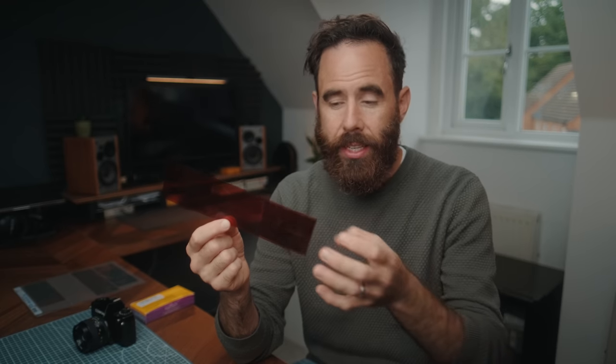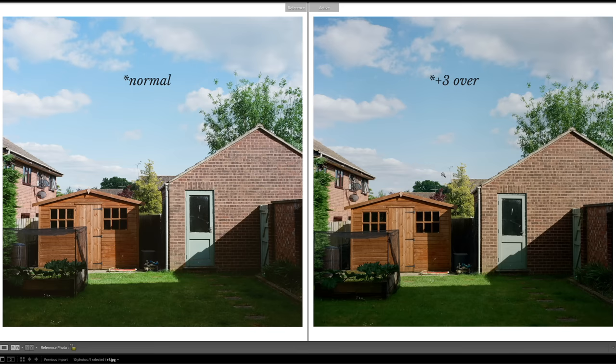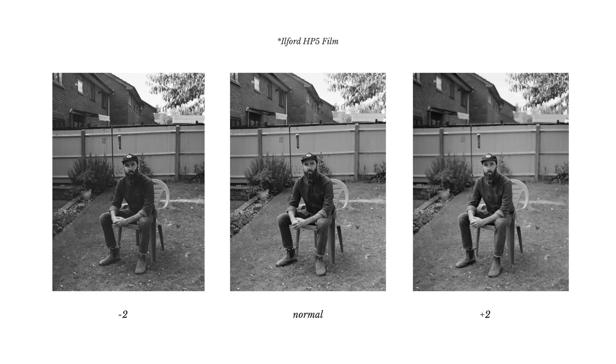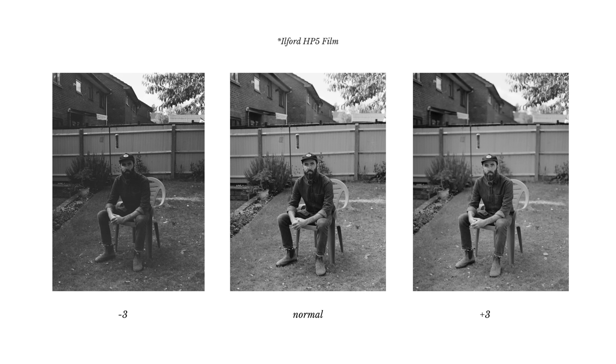In contrast to that, when you overexpose color negative or black and white film, you're building up extra information or extra density in the highlight areas — there's not going to be a lack of it. With negative film, even at two, sometimes three stops of overexposure, when you go and scan those images they can be corrected to look pretty close to the normal image itself. You can see again in this exposure test — two and three stops corrected almost fine and looked just about the same as the normal exposure.